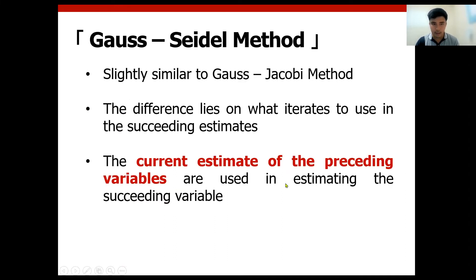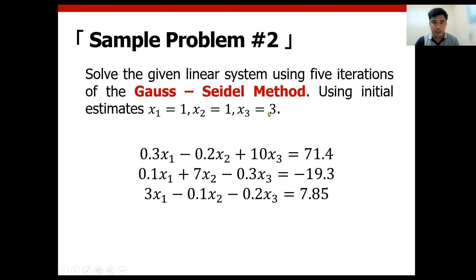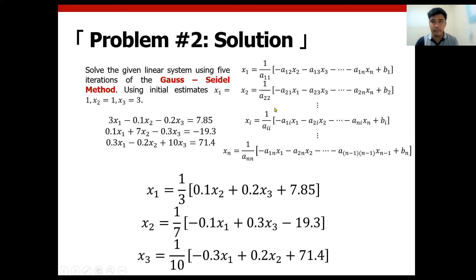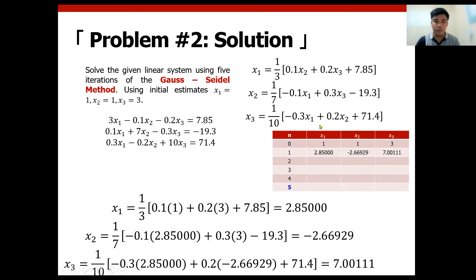So we use the current estimate on the preceding variable. To make it clearer, the same example as before: initial estimates 1, 1, and 3, we will be using Gauss-Seidel method here. The first same principle applies — you need to check if it is diagonally dominant. Since we utilize the same example, we just interchange the first equation and the third equation to make it a diagonally dominant matrix. After that, same as Gauss-Jacobi, use the reduced form.